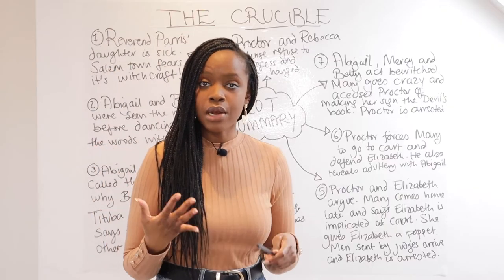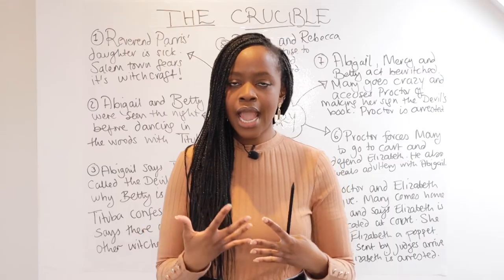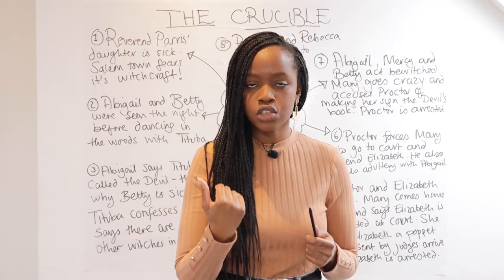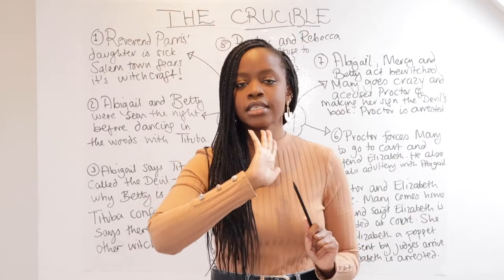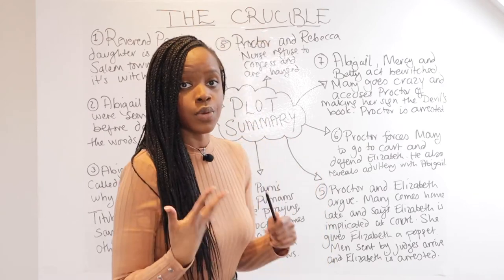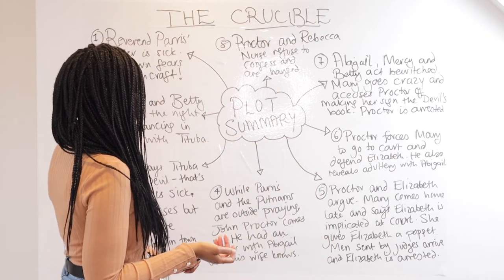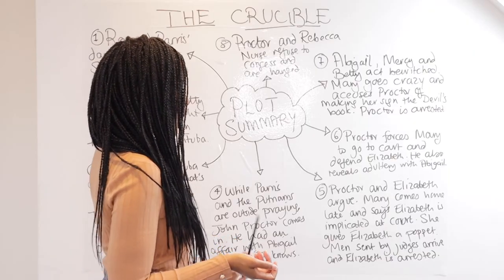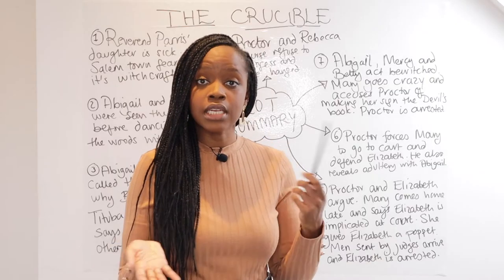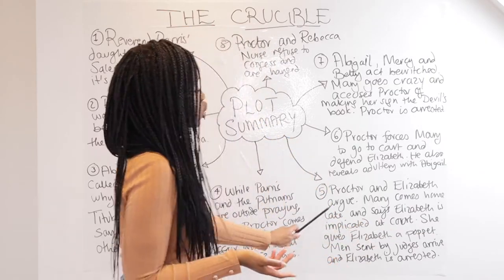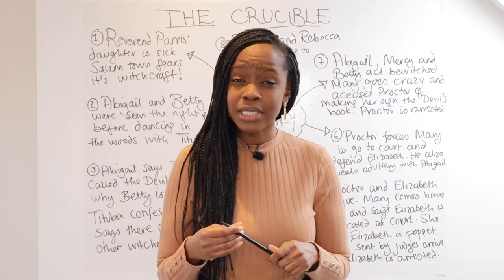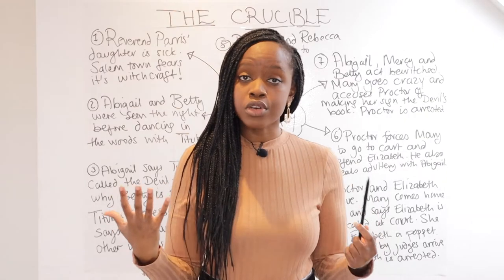When John Proctor comes in, we get the sense he is tall and good-looking. Abigail is still very much in love with him and tries to seduce him, but he pushes her away, saying what happened between them is in the past. We then move on to the Proctor household, where John and Elizabeth are essentially arguing.